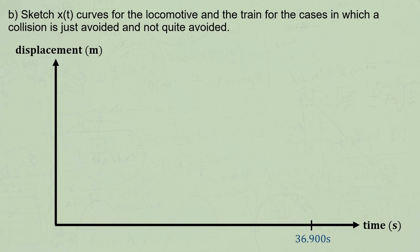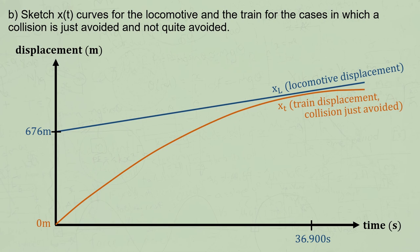Let's start with the locomotive. It starts with a displacement of 676 meters, in our model, and has constant speed, which on a displacement time graph is of course represented by a straight line.